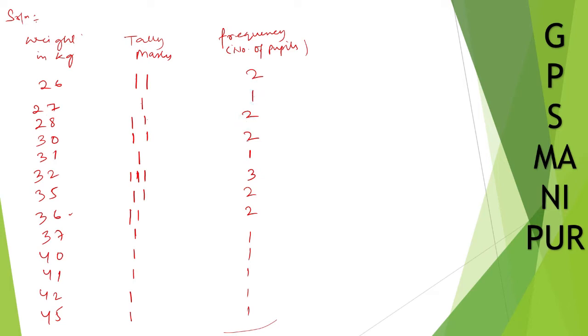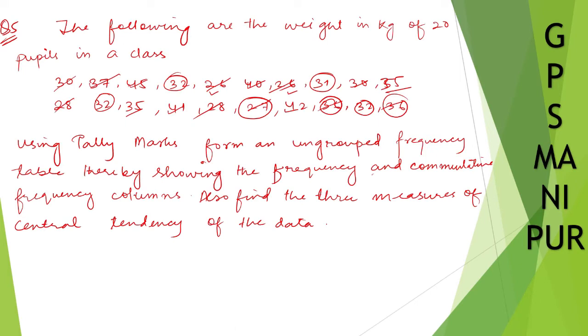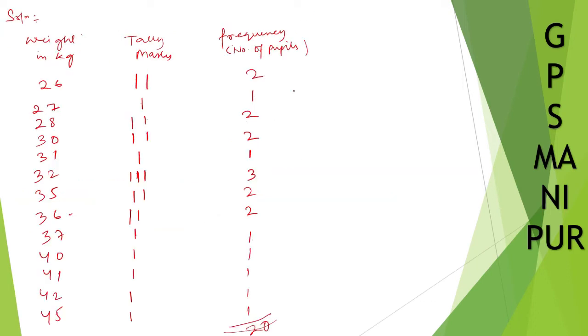Let us check we are correct or not. Adding all frequencies: 2 plus 1 is 3, then 5, 6, 7, 8, then 8 plus 3 is 11, then 13, 14, 15, 16, 17, 18, 19, 20. So total is 20. We are correct. Now we need to find out the cumulative frequency.